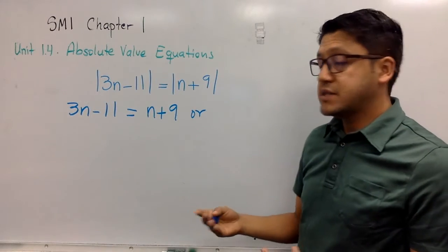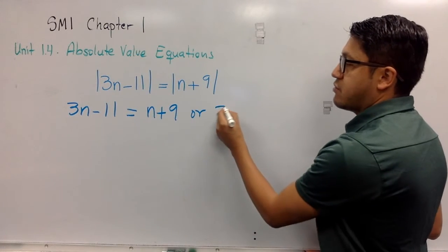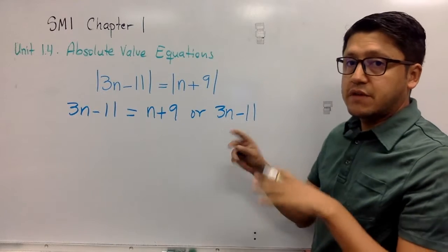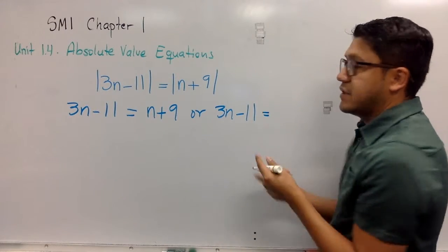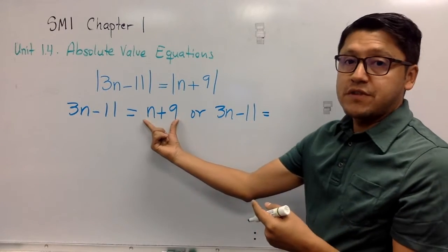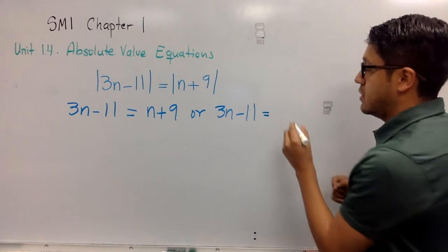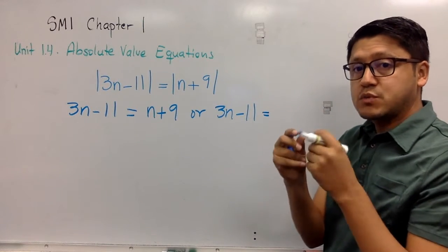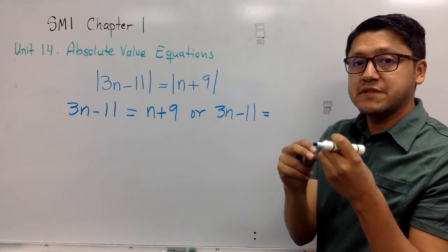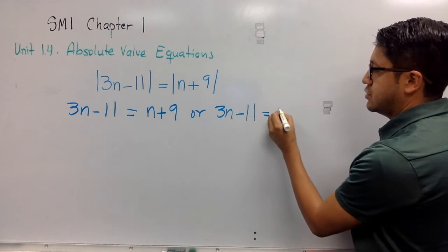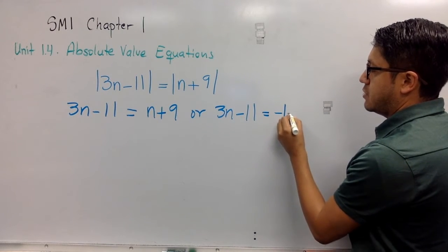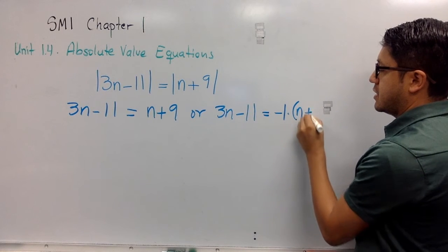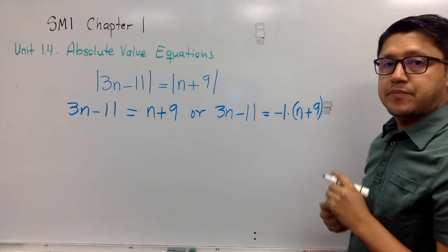and the other possibility is that we rewrite this expression on the left with the negative option of this expression. Be careful, the negative option of something is when you multiply that positive by negative 1, which means you do this: negative 1 multiplied by n plus 9, right?